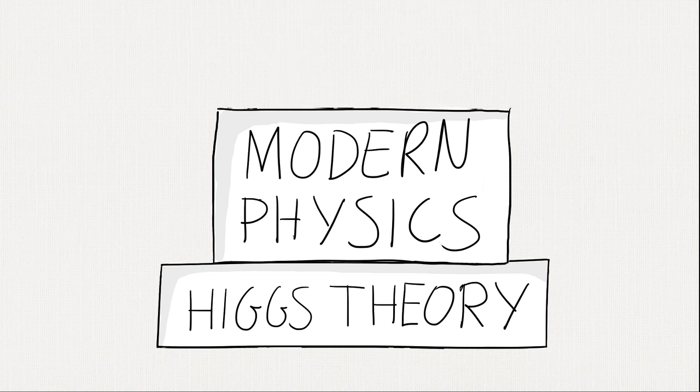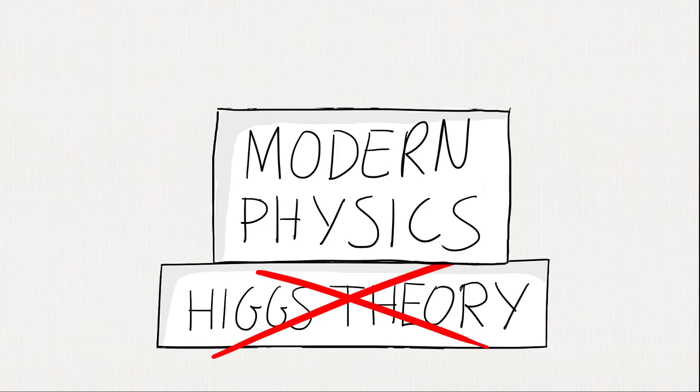Higgs theory became a foundation for modern physics. Others used his ideas to create more and more theories. Only problem, the Higgs field was never proven. And if it was incorrect, it could shatter everything we thought we knew about physics.